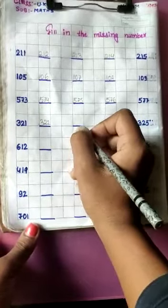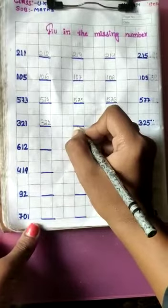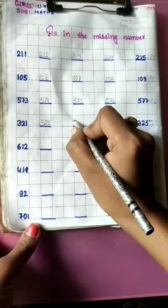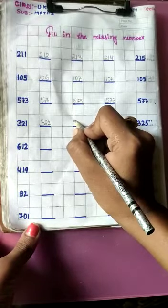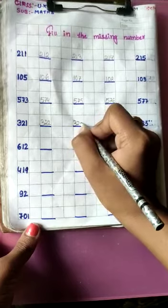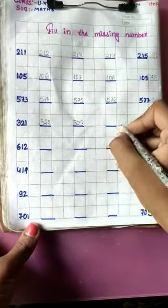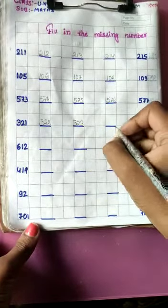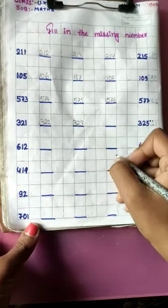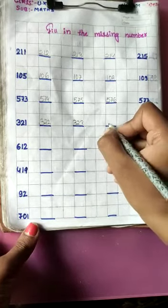After 322 — which number is missing? 321, 322 — after? Which number is missing? 323. After 323 — which number is missing? 324.